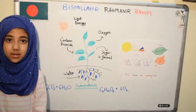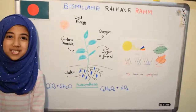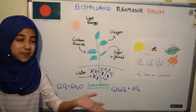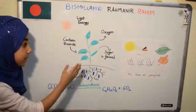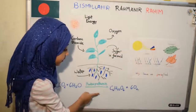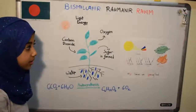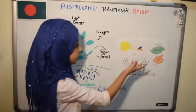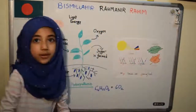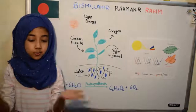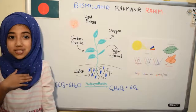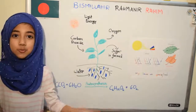Assalamu alaikum Fatiha. Wa alaikum assalam Baba. Welcome to Math Magic with Fatiha. We all know that plants make their own food by photosynthesis, and we also know that sometimes leaves can be green or red. But we don't know why. We just read in books, memorize and forget. We don't ask ourselves questions. So today I'm going to show you why.